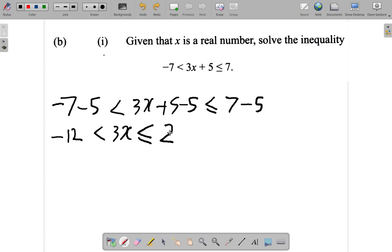Now, suppose I divide by 3. I have negative 12, which is less than 3x, which is less than or equal to 2, all divided by 3. Negative 12 over 3 is negative 4, is less than x, is less than or equal to 2/3.